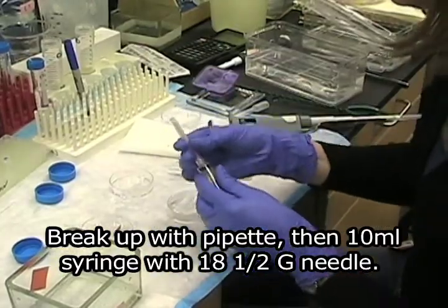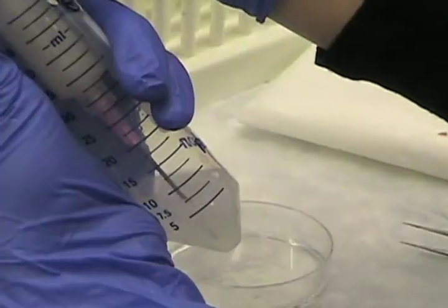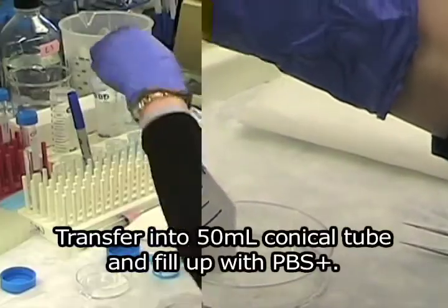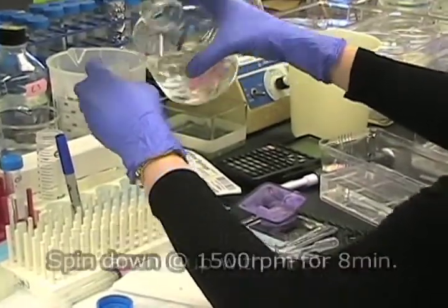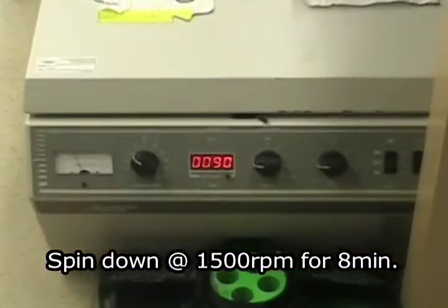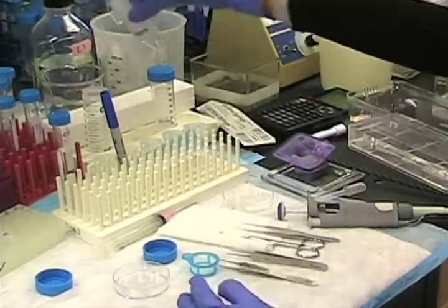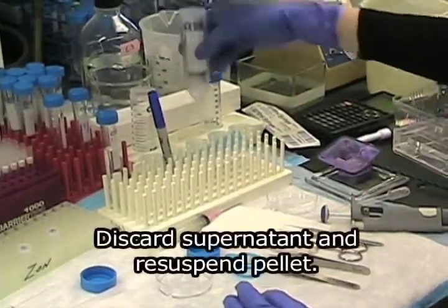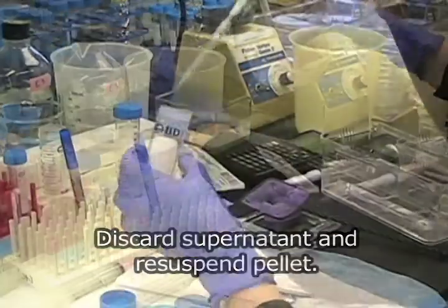Break up with 10 ml syringe and 18 and a half gauge needle. Transfer to a tube and fill up with PBS solution. Spin down at 1500 RPM. Aspirate out the supernatant. Resuspend in PBS.